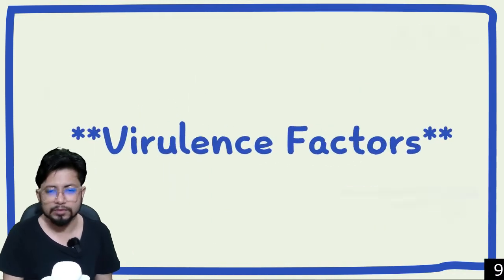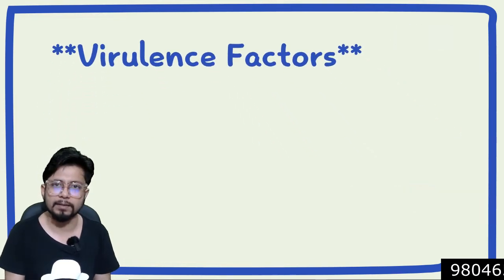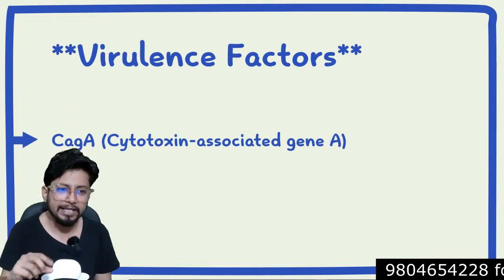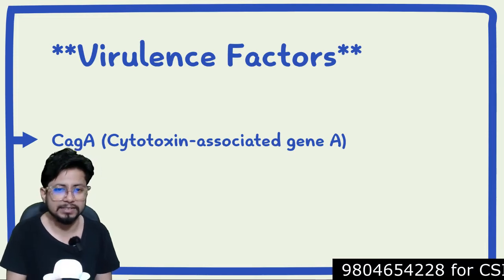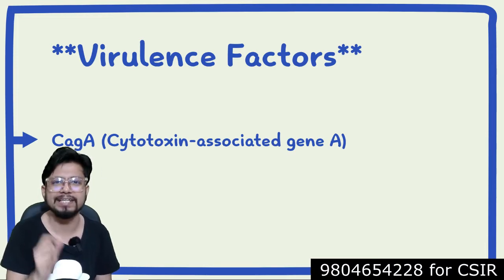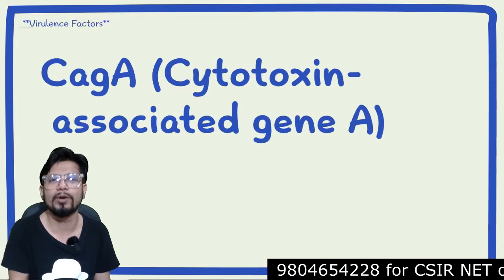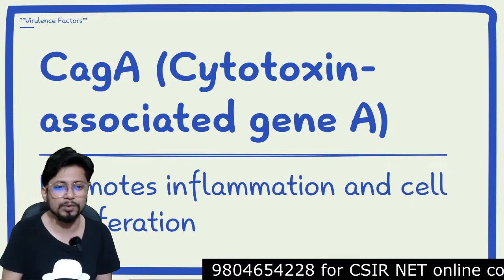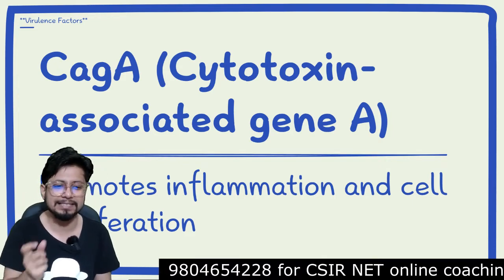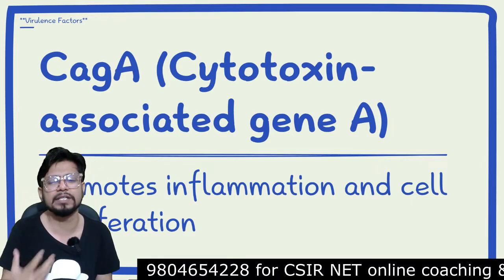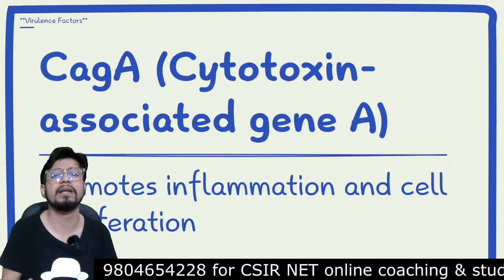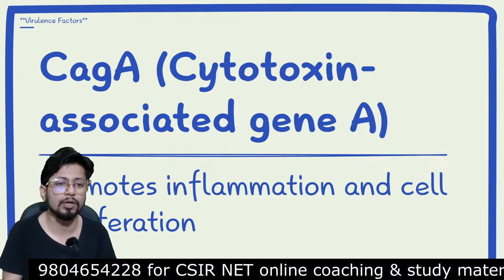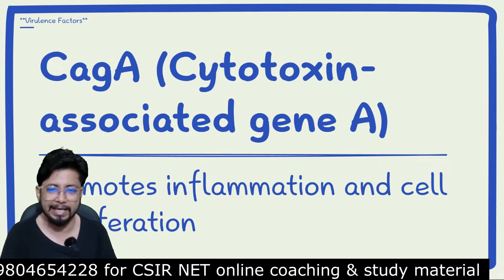The virulence factors for Helicobacter pylori — the first is CagA, which is known as cytotoxin-associated gene A. It is an important virulence factor that promotes inflammation and cell proliferation in the body.